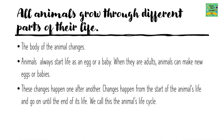All animals go through different parts of their life. The body of the animal changes. Animals always start their life as an egg or a baby. When they are adults, animals can make new eggs or babies. These changes happen one after the other, from the start of the animal's life until the end. We call this the animal's life cycle.